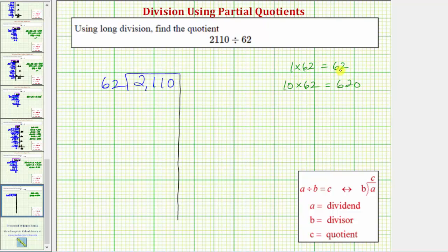And then if we know one times 62, then two times 62 would be equal to 62 plus 62, which would be 124. So if two times 62 equals 124, then 20 times 62 would be equal to 1,240. Let's go ahead and start with these products.